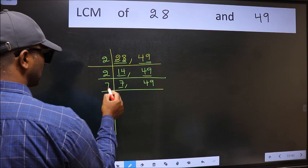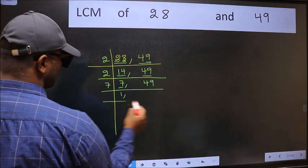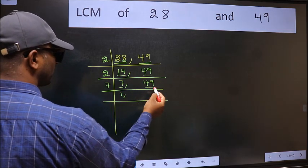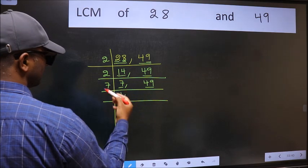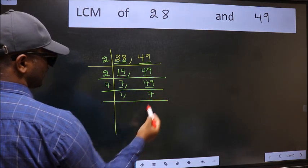Now here we have 7. 7 is a prime number, so 7 times 1 is 7. The other number 49 - when do we get 49 in 7 table? 7 times 7 is 49.